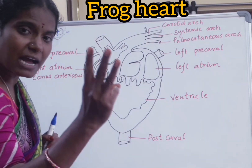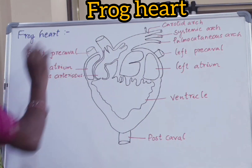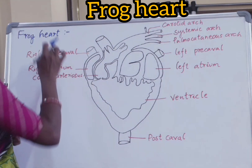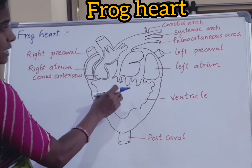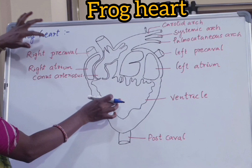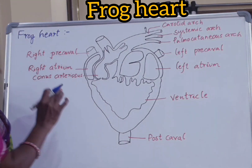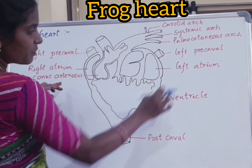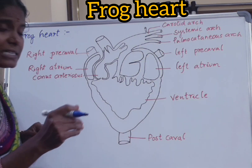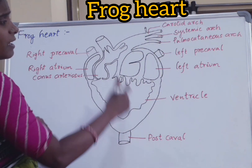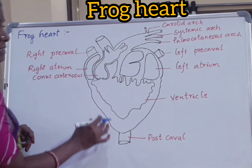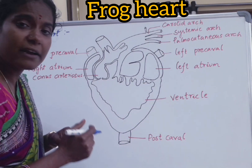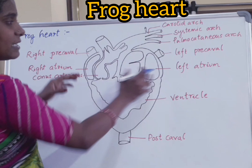The three-chambered heart is present in the frog. The blood vascular system of a frog consists of the heart, blood vessels, as well as blood. The entire heart of a frog is covered with a pericardium — it is a membranous layer covering the heart.